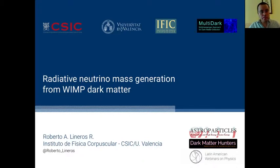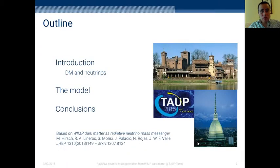The title of the talk is Relativistic Neutrino Mass Generation from WIMP Dark Matter. My name is Roberto Lineros and I'm a postdoc at the Instituto de Fisica Corpuscular in Valencia. This is the outline of the talk. I will start with an introduction about dark matter and neutrinos, then describe the model and its features, and arrive at the conclusions.